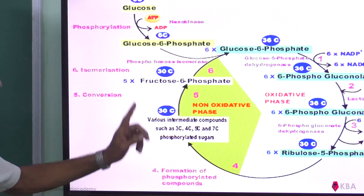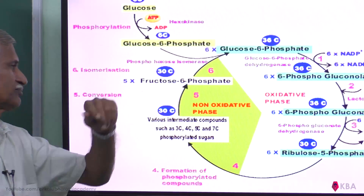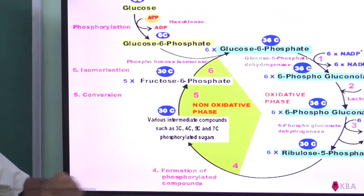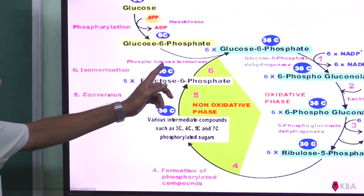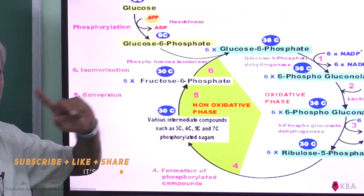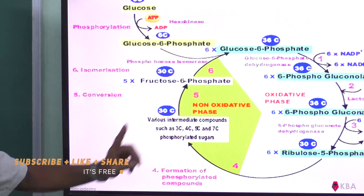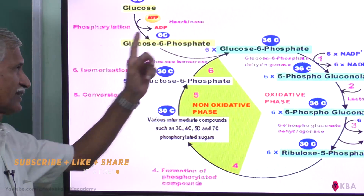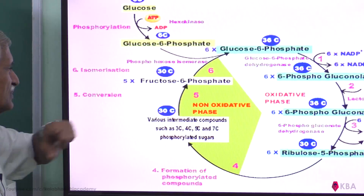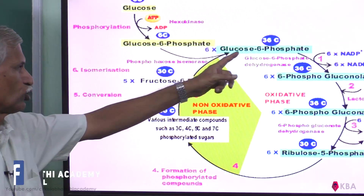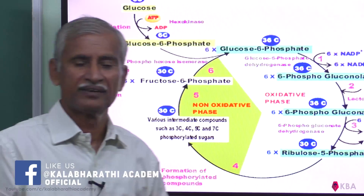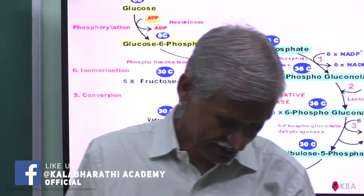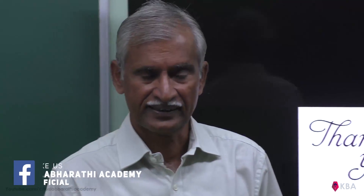The intermediates become fructose 6-phosphate. Phosphohexose isomerase, an isomerizing enzyme, converts fructose 6-phosphate back into glucose 6-phosphate, which re-enters the cycle. This is the pentose phosphate pathway. Thank you, students.